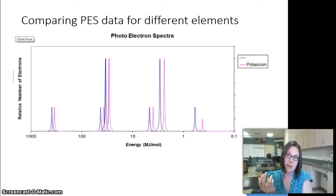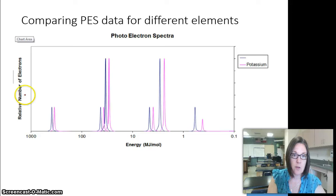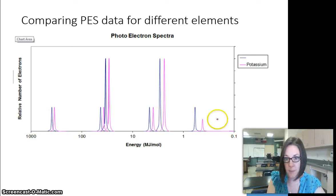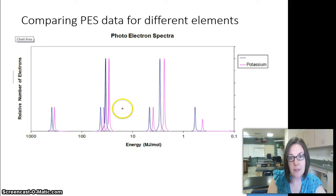Let's take a look if we've got two different PES data on one set of axes. Number of electrons goes from larger to smaller. The one we did first, potassium, is the set of purpley pink peaks. And then they've overlaid another element's PES data on top of it, and it looks really similar.